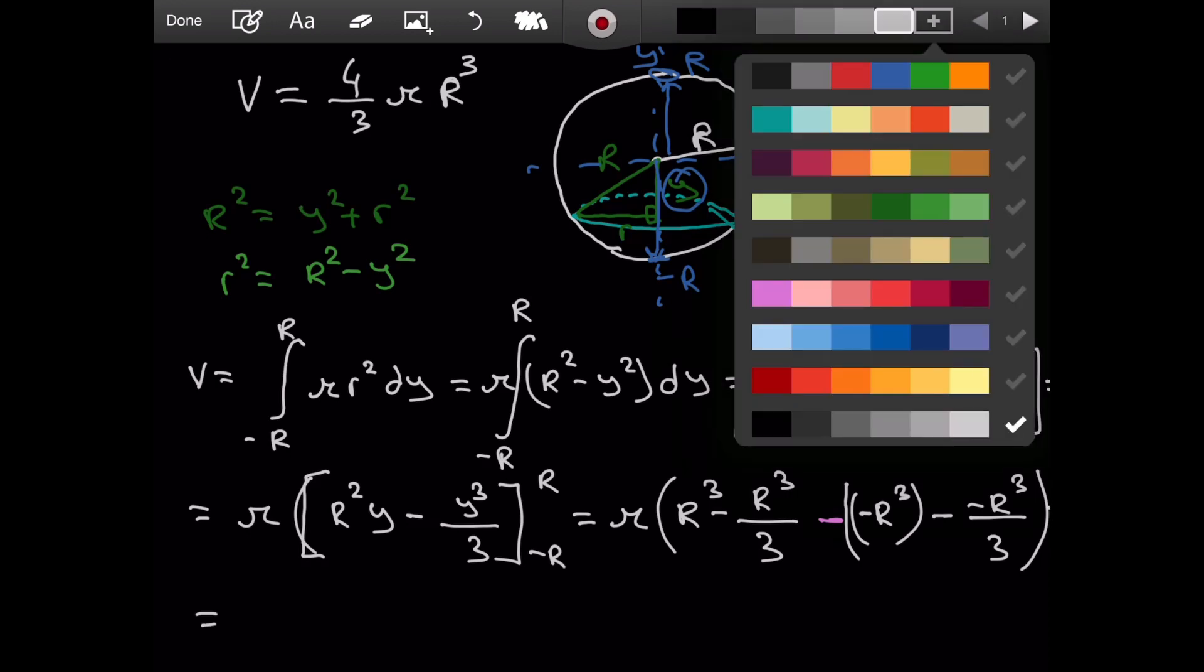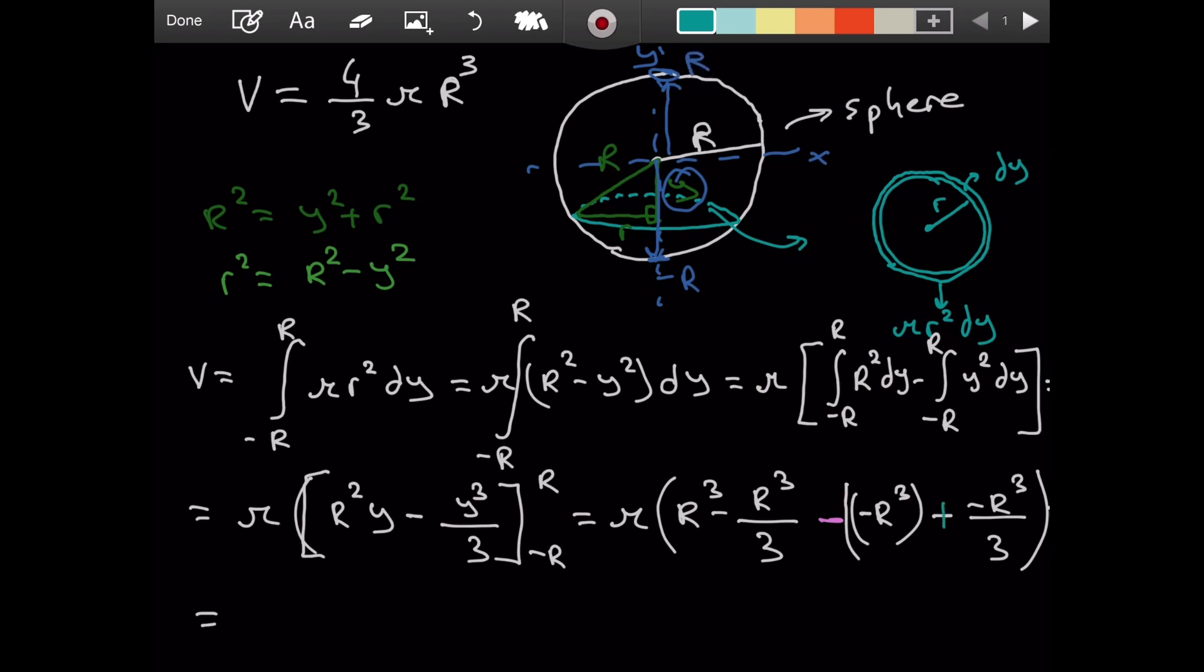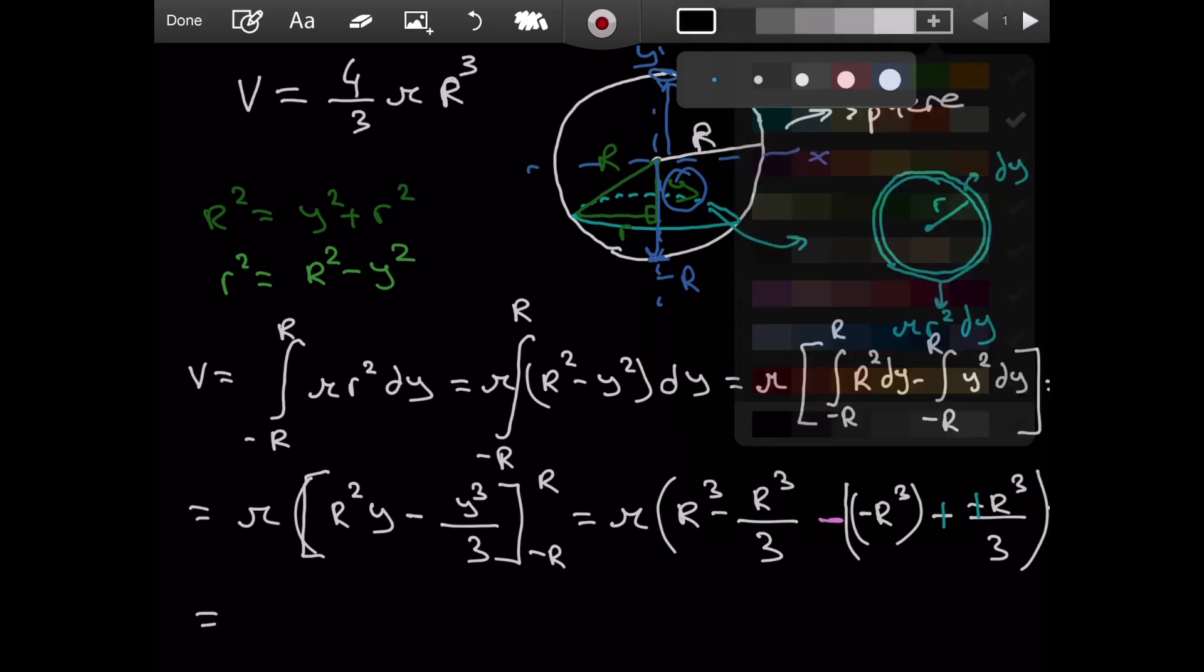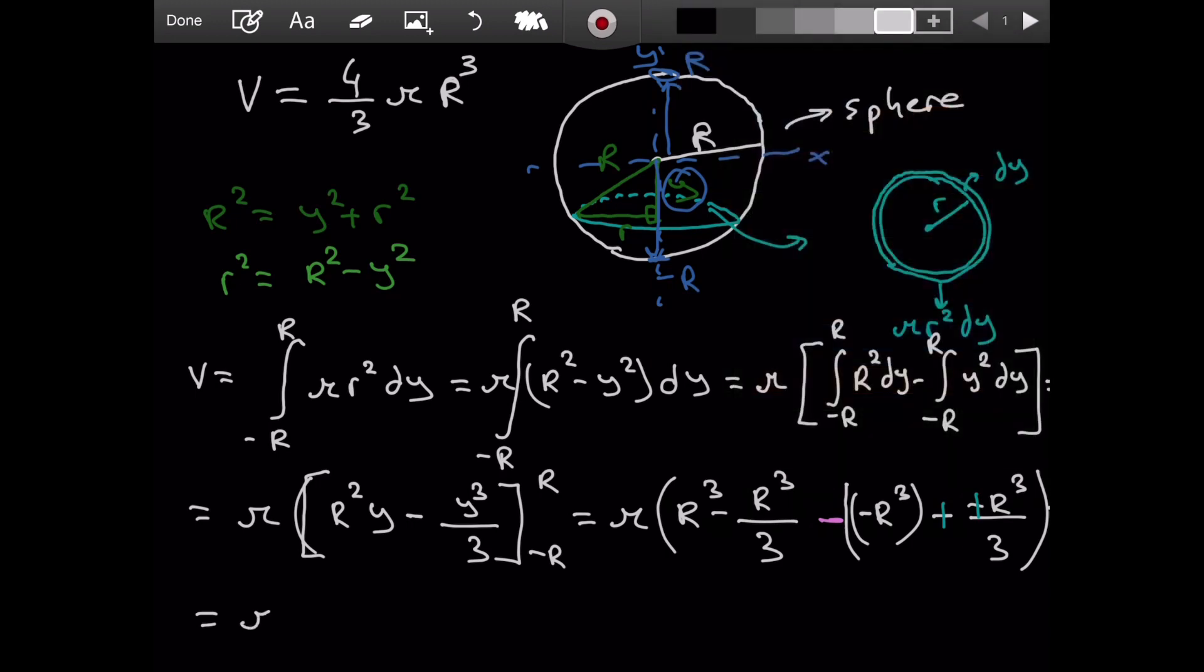So, first of all, these become positives. And if we open the parentheses, distribute the negative sign, we will have pi. We have r cubed minus minus r cubed. So, minus a negative r cubed. That will be two r cubed when we add it with the first r cubed. And then minus two r cubed divided by three.